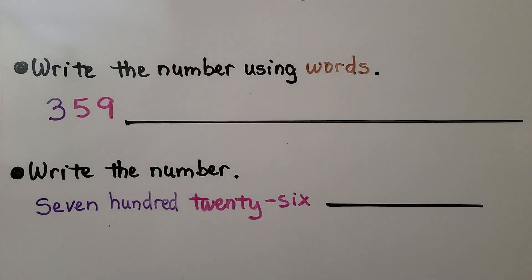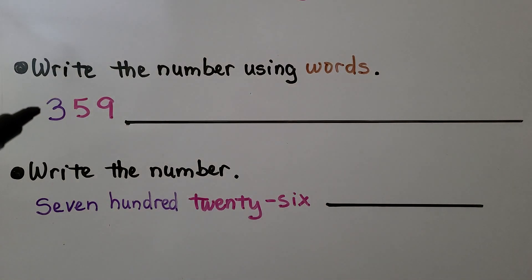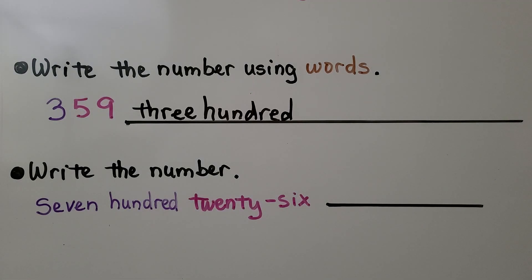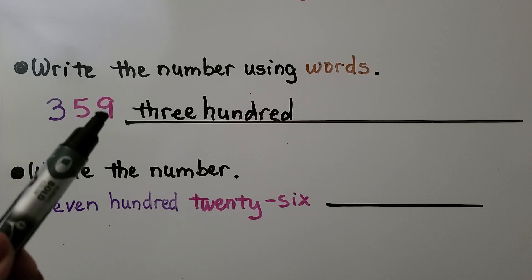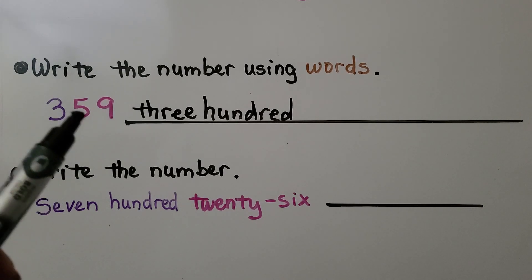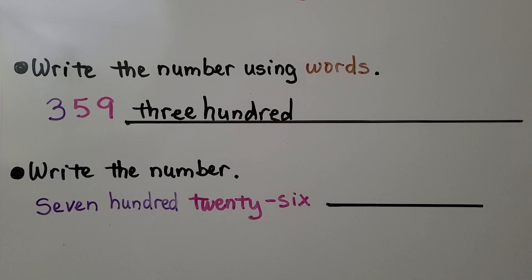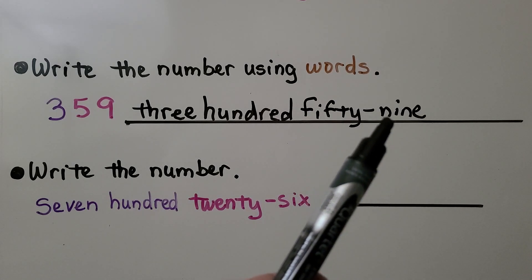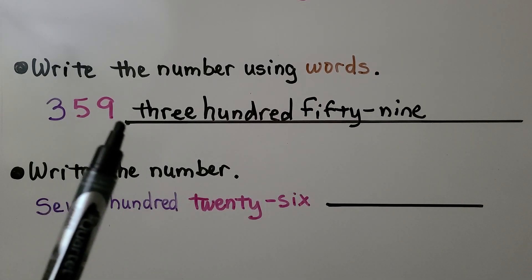Here we need to write the number using words. We look at the number in the hundreds place — we have 300. We look at the digits in the tens place and ones place together — I see 59. We use a hyphen because it ends with a nine.